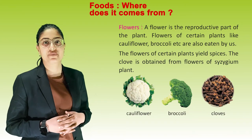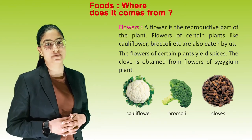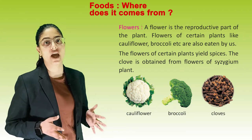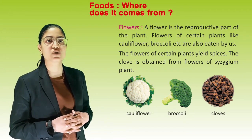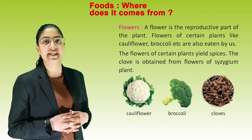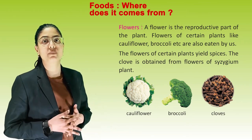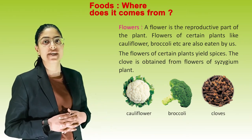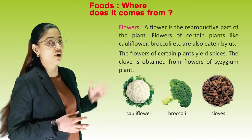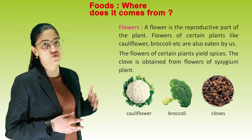Flower: a flower is a reproductive part of the plant. Flowers of certain plants like cauliflower and broccoli are also eaten by us. The flowers of certain plants yield spices; the clove is obtained from the flower of the Caesium plant.